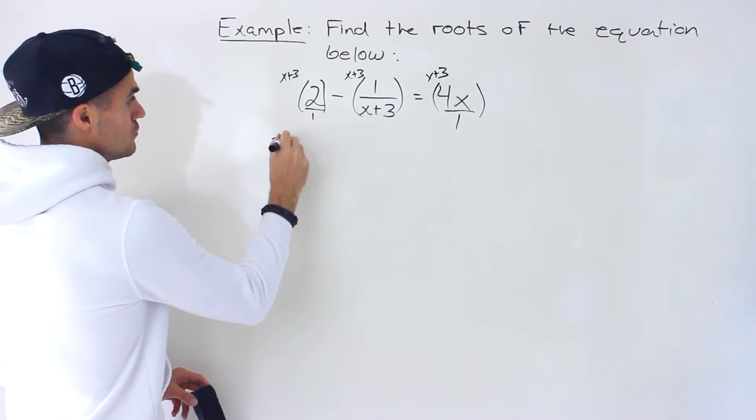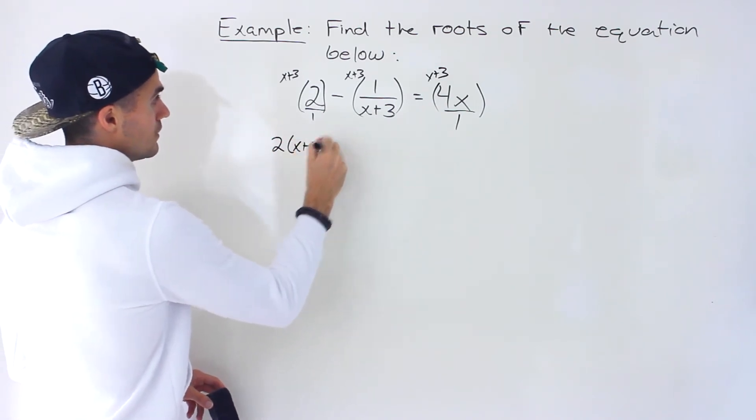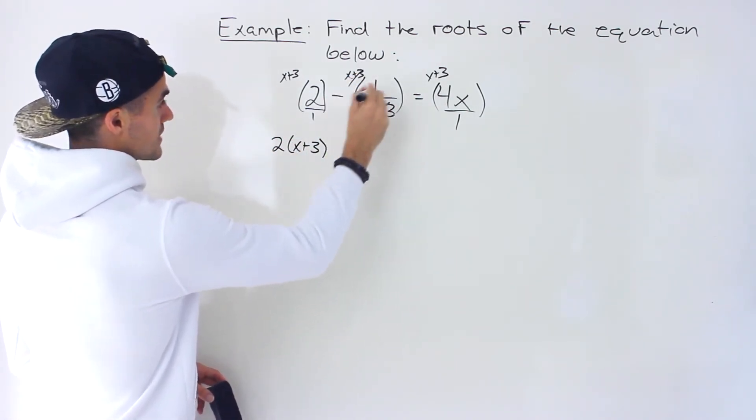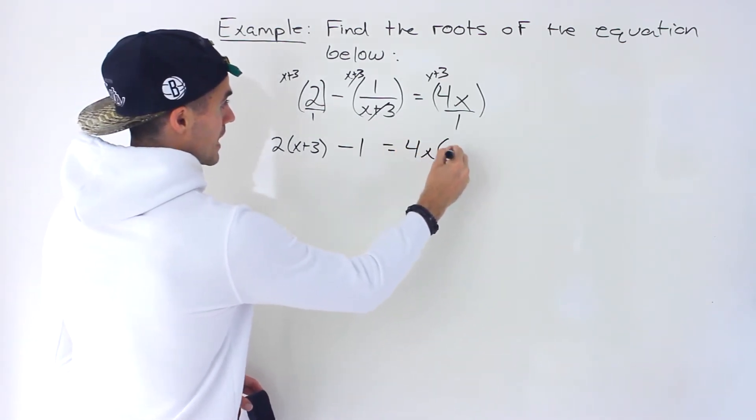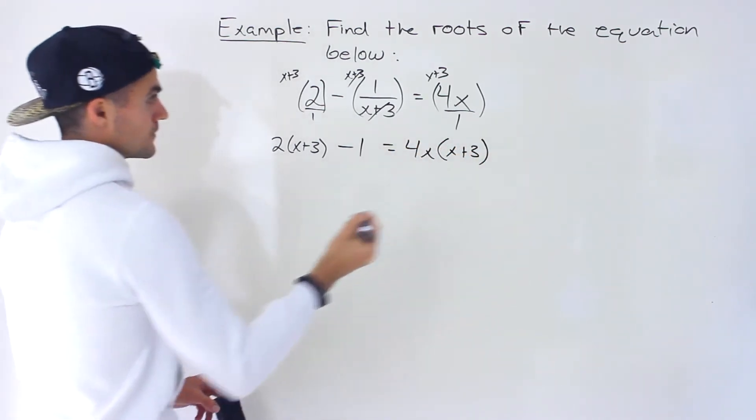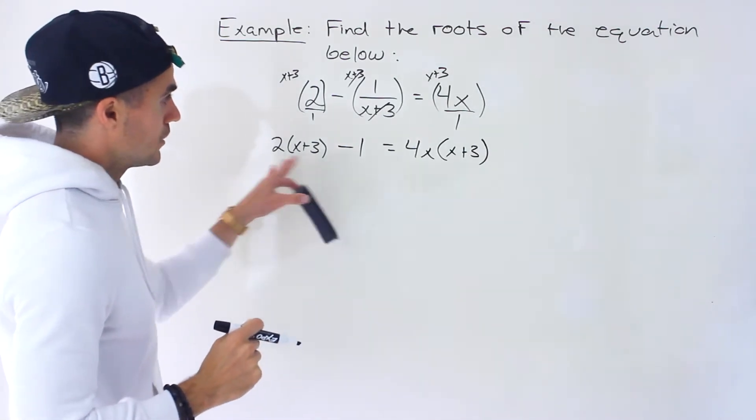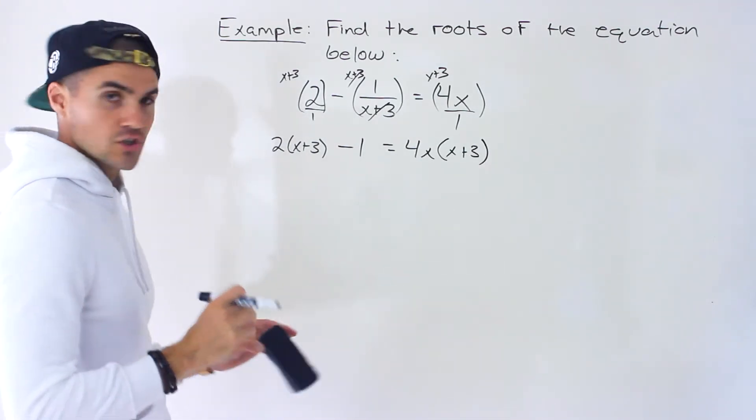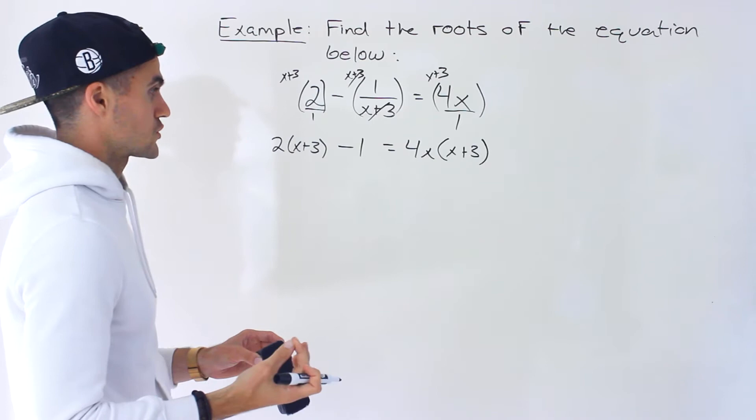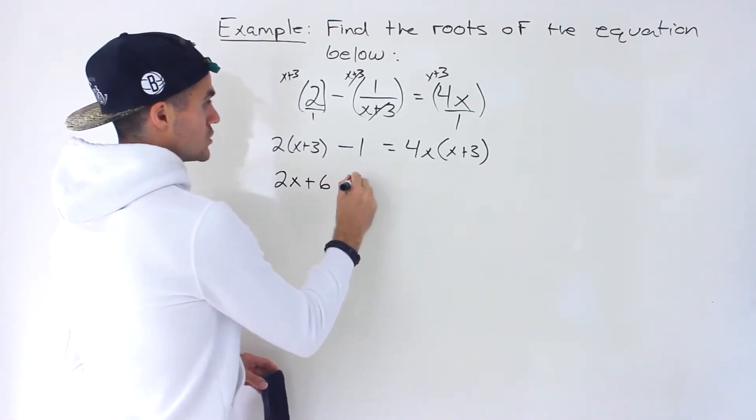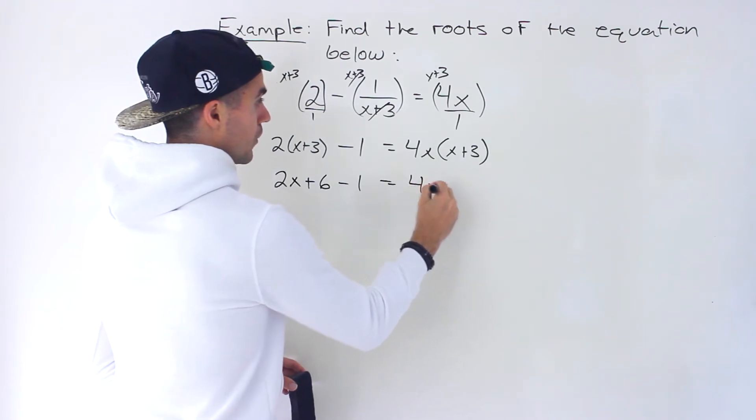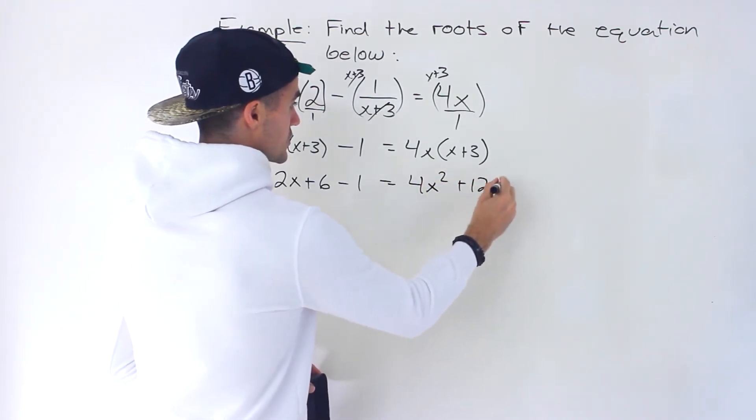And so what would we get? We'd get 2 bracket x plus 3 over here. These x plus 3s cancel out so we're left with a minus 1 there. And then we'll have 4x times x plus 3. And so now notice we're going to end up with an equation where there are no fractions. And now it just becomes the same as any equation that we've solved before in this section.